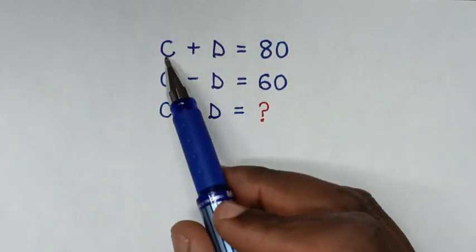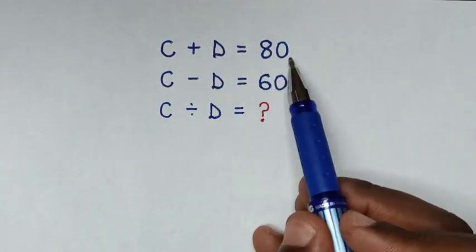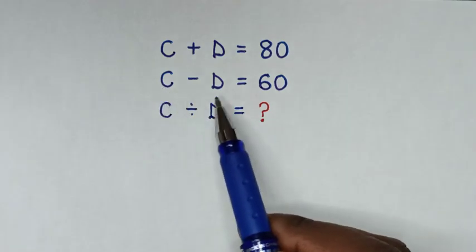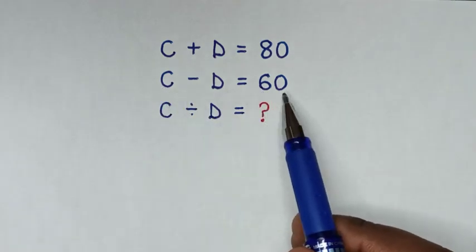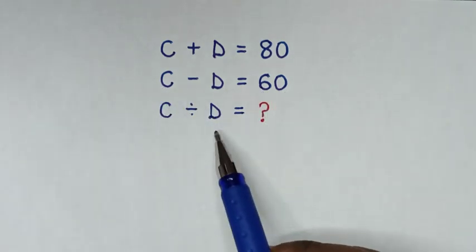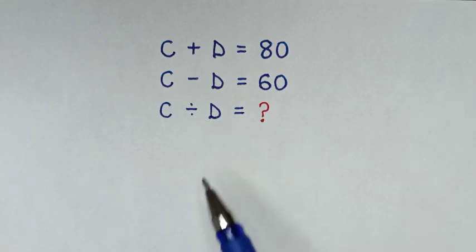Hello, how to solve C plus D equals 80, C minus D equals 60, to find the value of C divided by D. So first,